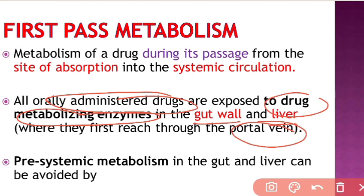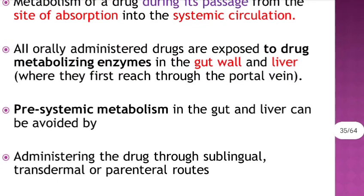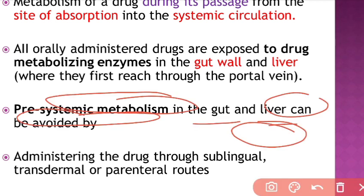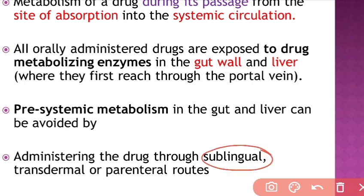Pre-systemic metabolism in the gut and liver can be avoided. You can avoid this pre-systemic metabolism by changing the route of drug administration. For example, you can administer the drug through the sublingual route, transdermal patch, or parenteral route.